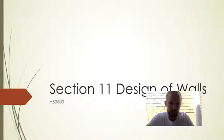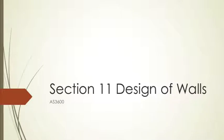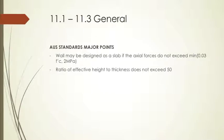Welcome to Section 11. Today we'll be covering the design of walls per the Australian Standards Section 11. Looking at the standard and commentary in Section 11.1 to 11.3, it states that the wall must be designed as a slab if the axial forces do not exceed the minimum of 0.03 times the strength of the concrete or 2 MPa, and also the ratio of the height to thickness does not exceed 50.